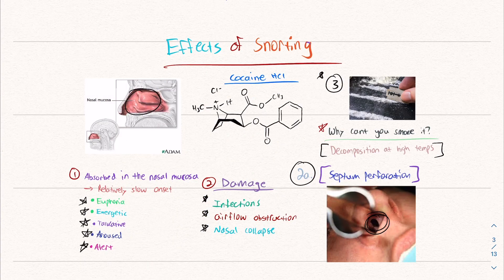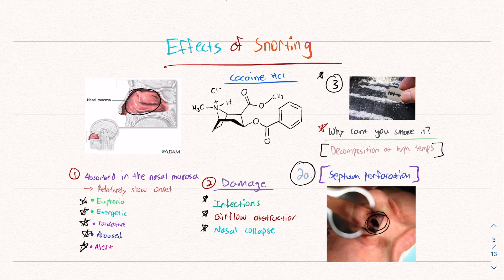And then there's various effects of snorting. It's absorbed into the nasal mucosa, this highly absorbent area to produce euphoria, energy, but there's also damage, infections, airflow obstruction, septal perforation, and you can't smoke it because it decomposes at high temperatures.